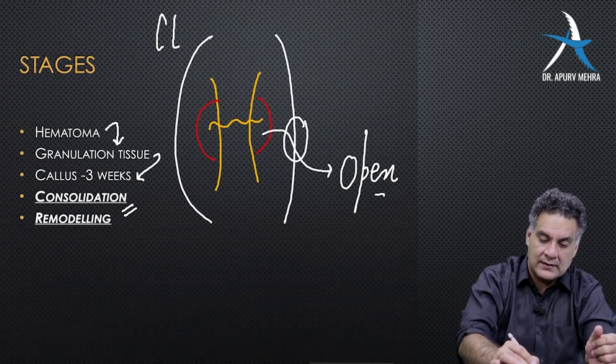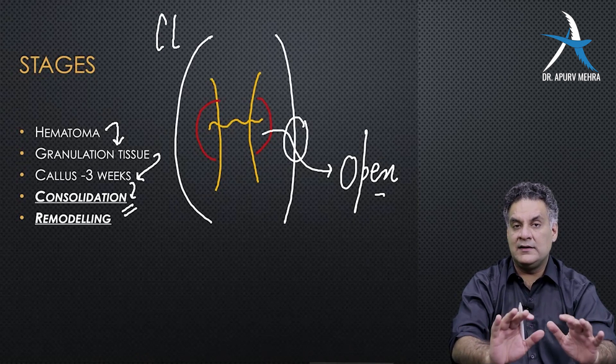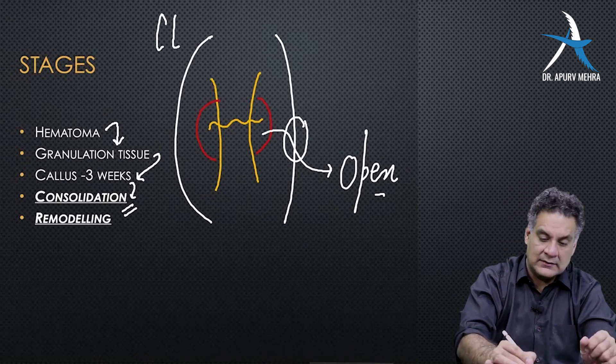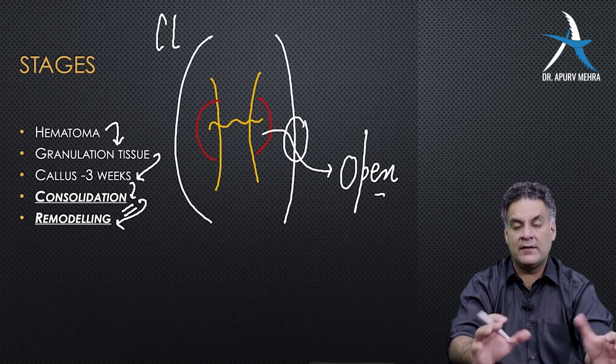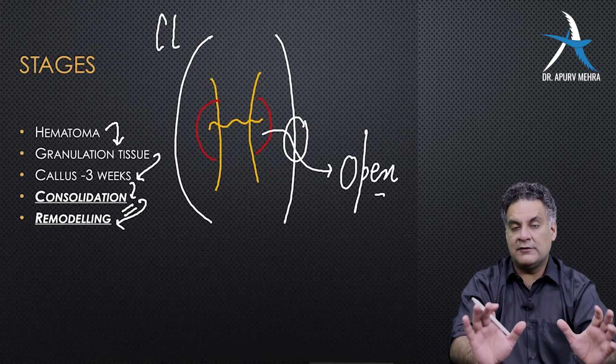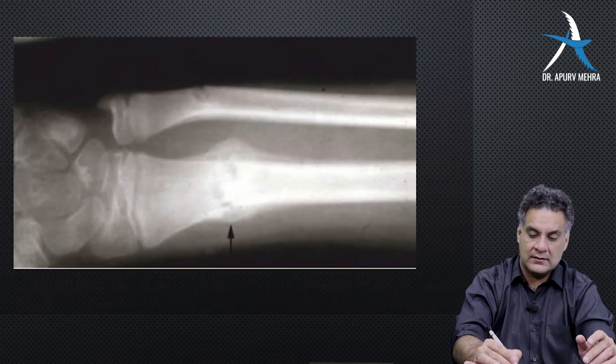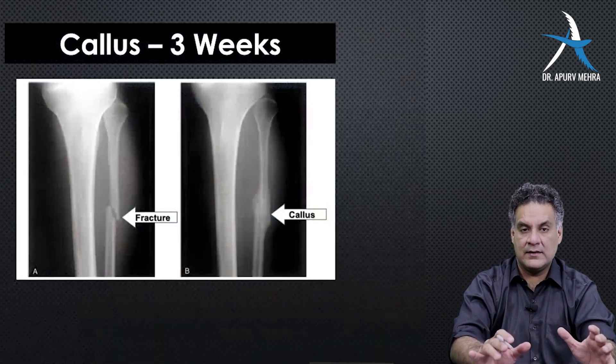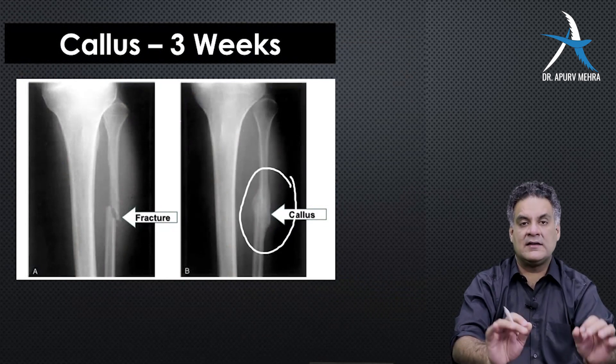Then over it, the hard callus or consolidation occurs where the mobility is lost. The fracture starts to unite. And then over that, the remodeling will occur where the osteoclasts also have a role to play. You won't know where the fracture took place. It takes place over years. This soft callus is seen at three weeks. Important.